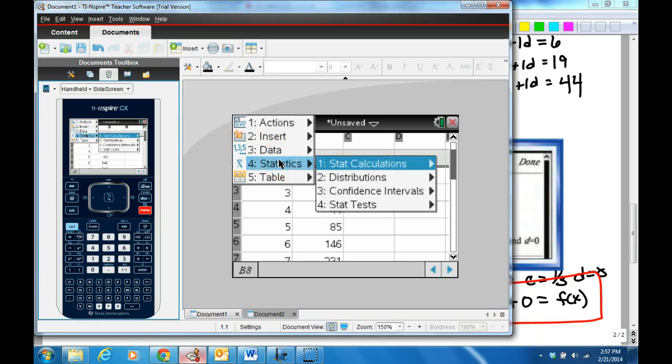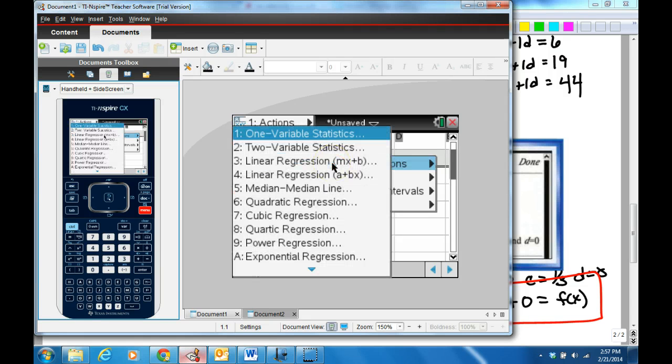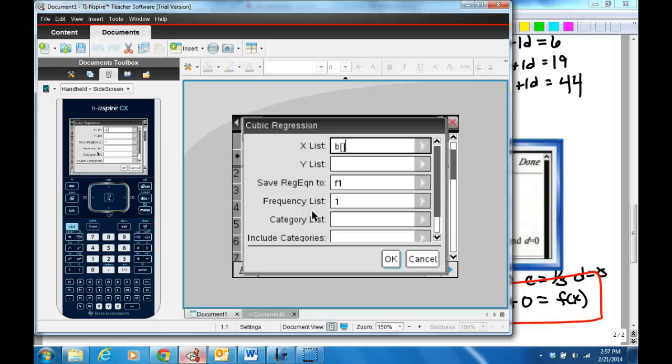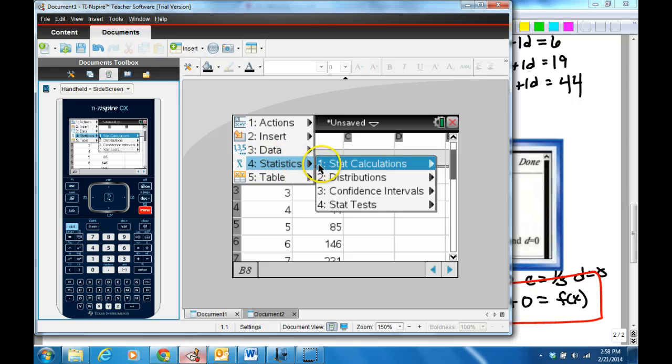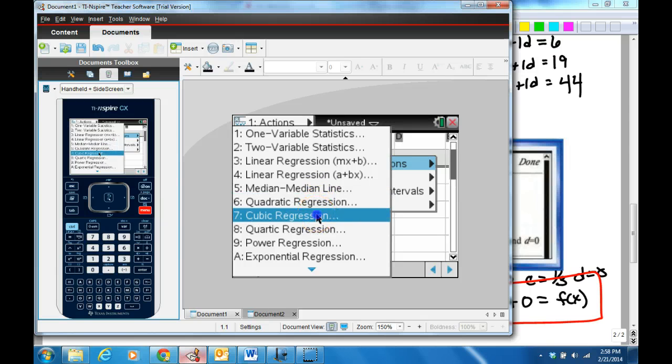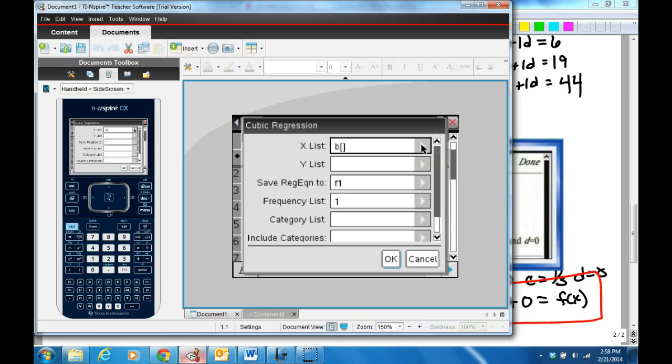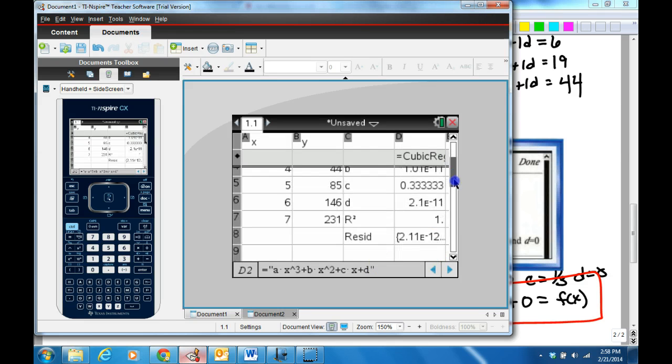Here's what you're going to do. You're going to go to menu, you're going to go to statistics, you're going to go to stat calculations. What level degree did we find that we were at when we went and found our differences? Third degree. So we're going to go down to cubic regression. So now it asked me for my X list. I'm going to pick the X value for the X's. I'm going to go to Y and put the Y value for the Y's. And then I'm going to hit OK.